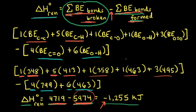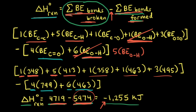We did this problem assuming all of the bonds drawn in our dot structures were broken and formed. However, if we look closely, we show breaking one oxygen-hydrogen single bond on the reactant side and forming six oxygen-hydrogen single bonds on the product side. So we could have canceled one of those out — instead of showing six, we could write five times the bond enthalpy of an oxygen-hydrogen single bond. We still would have ended up with the same answer of negative 1,255 kilojoules. If you see a bond that's the same on both the reactant and product sides, you don't have to show the breaking and forming of that bond — it makes the problem a little shorter.